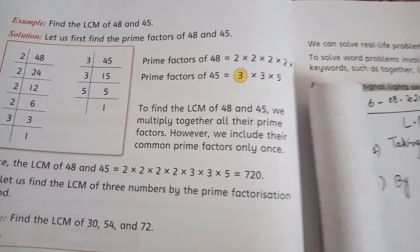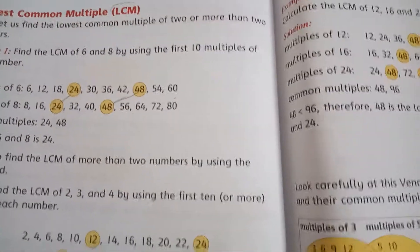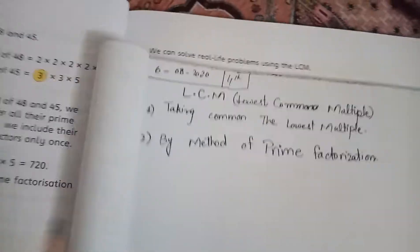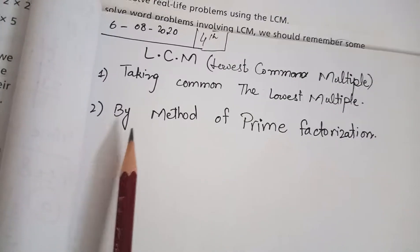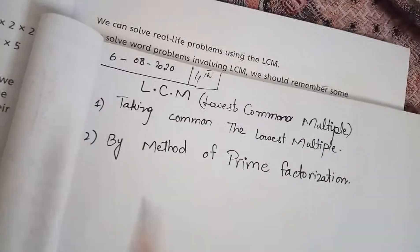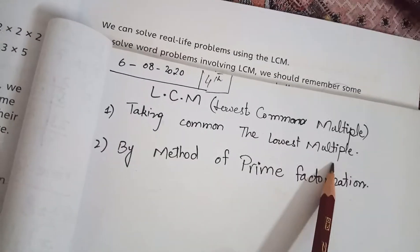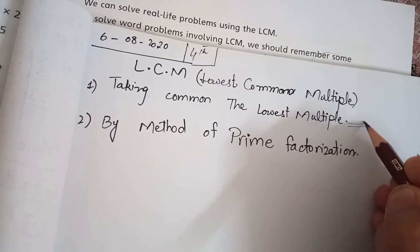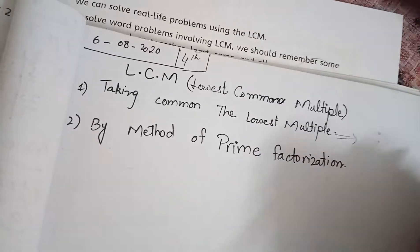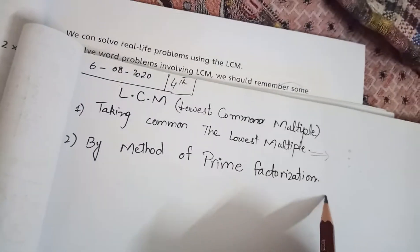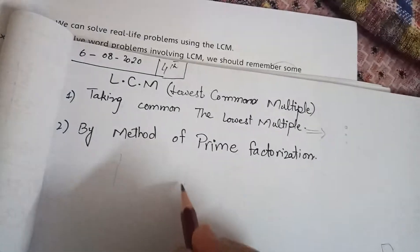This was the method of finding the lowest common multiple through common multiples. Now there is another method for finding the LCM — the method of prime factorization. There are two methods of LCM. The first one: write the multiples of the given numbers and take the lowest common multiple. The second method is prime factorization, where you make the prime factors of any number.